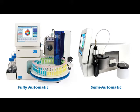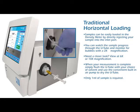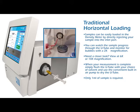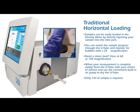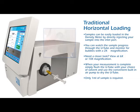Fully automatic and semi-automatic sample loading options are available. Traditional horizontal loading: samples can be easily loaded in the density meter by directly injecting your sample into the inlet port. When your measurement is complete, simply flush the U-tube with your choice of solvent and use the convenient built-in air pump to dry the U-tube. Only one milliliter of sample is required.